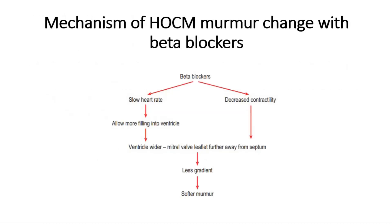This picture shows the mechanism of HOCM murmur change with beta blockers. Beta blockers slow down the heart rate and reduce heart contractility. The slower heart rate allows more filling into the ventricle, the ventricle becomes wider, and the mitral valve leaflet moves further away from the septum. There is less gradient, causing a softer murmur.